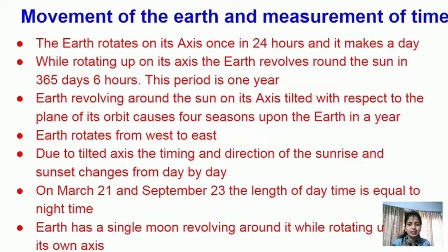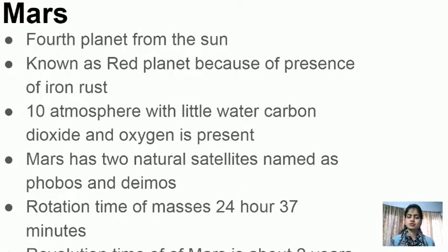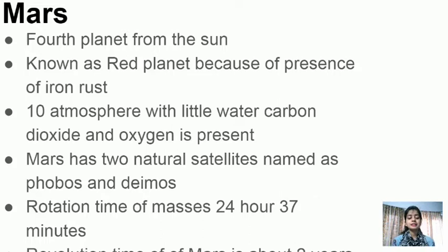Earth has a single moon revolving around it. Mars is the fourth planet — scientists are searching for life on Mars. It is called the red planet because of the presence of iron oxide in its atmosphere, with traces of carbon dioxide and water. Mars has two natural satellites: Phobos and Deimos. Rotation time is 24 hours 37 minutes — approximately the same as Earth — but revolution time is about 2 years.